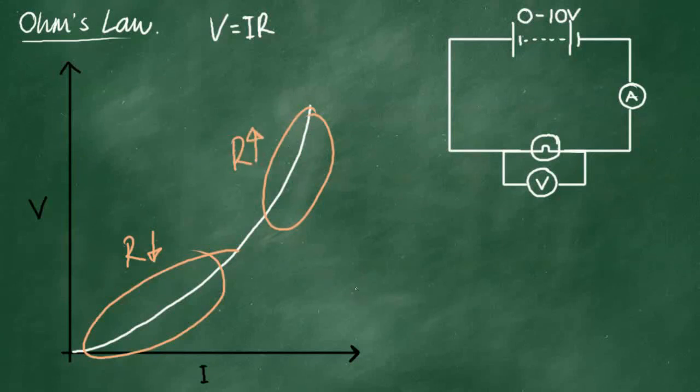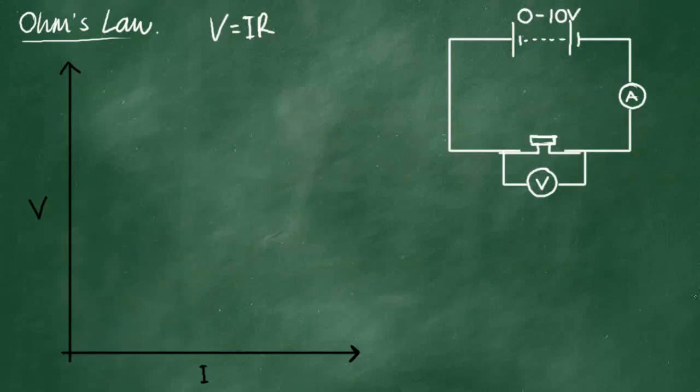Now, the last component we're going to talk about is a thermistor. And thermistors have opposite properties in terms of their thermal conductivity properties to most metal conductors. And in fact, initially, you have quite a high resistance, which means that you need a large increase in potential difference to increase the current a small amount.